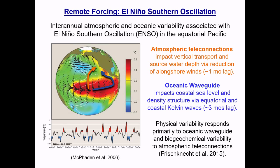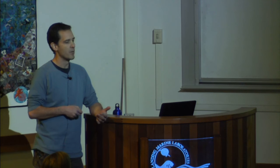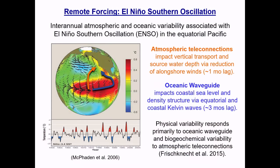Those were local and regional forcings from the wind field, but the California Current is also impacted by remote forcing. One main mechanism is the El Niño Southern Oscillation. ENSO variability affects the California Current through atmospheric teleconnection with about a one-month lag, and through an oceanic waveguide connection via Kelvin waves with about a three-month lag. An interesting paper by Frisnes et al. found that physical variability in the California Current is primarily related to the oceanic waveguide, while biogeochemical variability is more closely related to the atmospheric teleconnection.